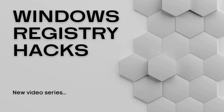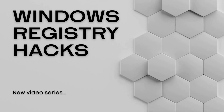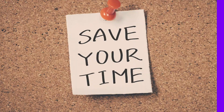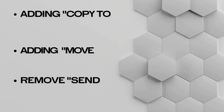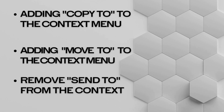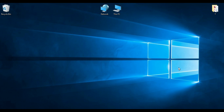Welcome back to the Windows Registry Hacks video series. In this episode, I will show you 3 useful registry tweaks to customize the context menu in Windows. The registry tweaks can save you time by allowing you to quickly move files and folders to any location on your computer. We will be adding Copy To and Move To options to the context menu, as well as disabling the Send To menu. So let's get started.